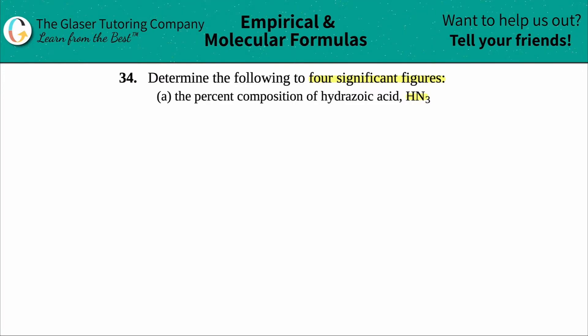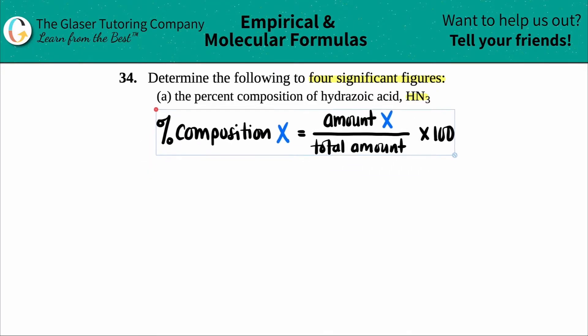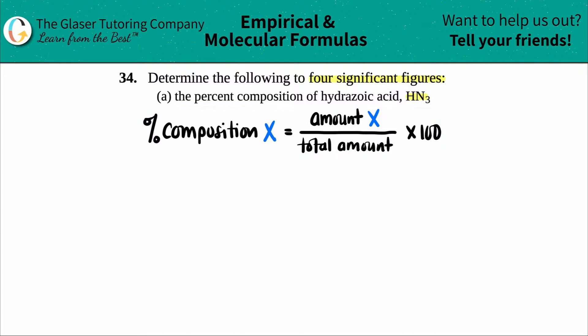So we want to find out the percent composition. Percents are always part divided by whole. In chemistry, we just add a little bit more. It's this formula. So you could find a percent composition from anything: grams, moles, molar masses, AMUs.